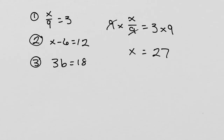I'll leave the next two for you. In the examples we've done so far, we needed to perform only one operation to solve the questions. So for our first example, we just did subtraction. For our second example, we just did division. And for this one, we just did multiplication. That is why they are called one-step equations.